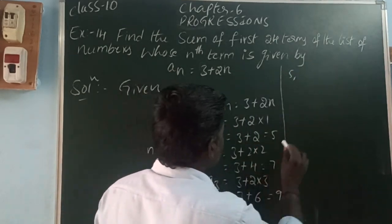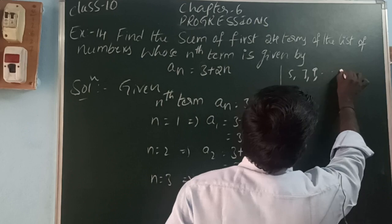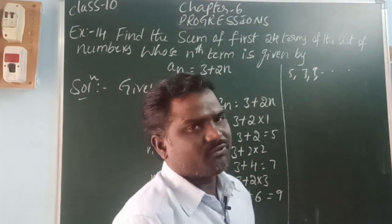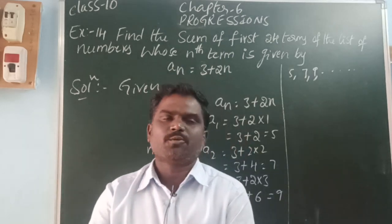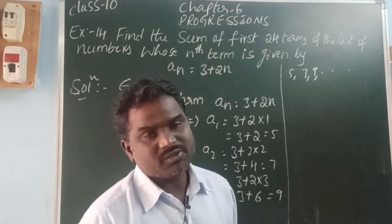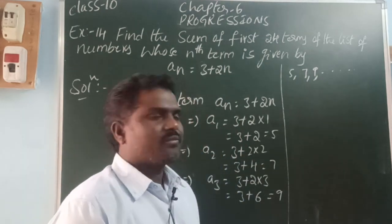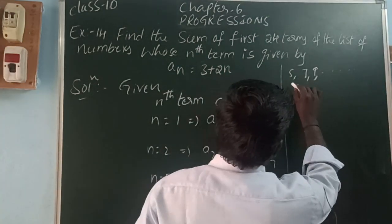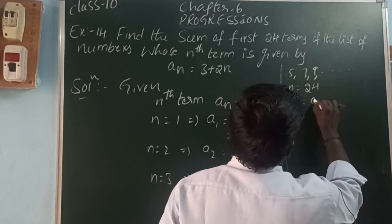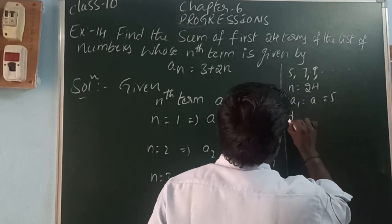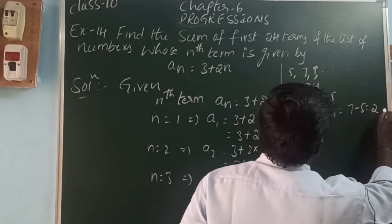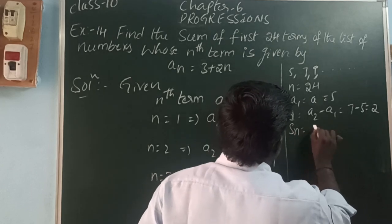The terms are 5, 7, 9, and so on. They are asking for the sum of 24 terms. The formula for sum of n terms is Sn = n/2 × (2a + (n-1)d). First find the first term and common difference. Number of terms n = 24, first term a = 5, common difference d = a2 - a1 = 7 - 5 = 2.